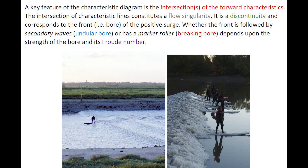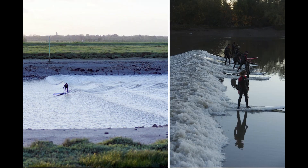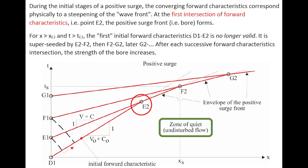A key feature of the characteristic diagram for a positive surge is the intersection of the forward characteristics. The intersection of characteristic lines constitutes a flow singularity; it is a discontinuity and corresponds to the front or bore of the surge. Whether the front is followed by a secondary wave — an undular bore — or a breaking bore depends upon the strength of the bore and its Froude number. Two photographs illustrate an undular bore on the left propagating from right to left, while the photograph on the right shows a breaking bore propagating from left to right. During the initial stage of a positive surge, the converging forward characteristics correspond physically to a steepening of the wave front.